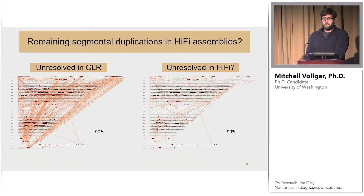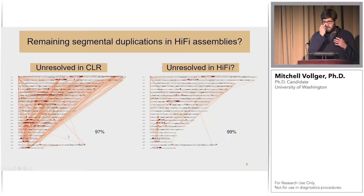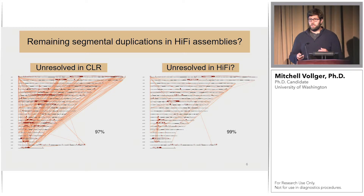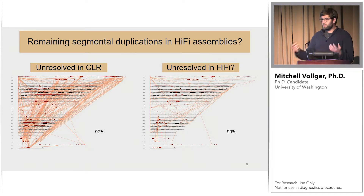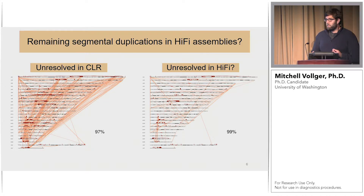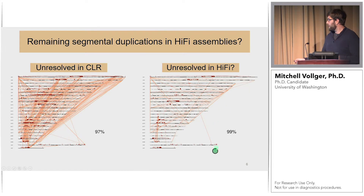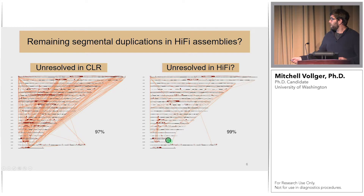We know from previous research that using PacBio CLR technology — not HiFi — duplications greater than 97 percent identical tend not to be resolved. Shown on the left are all segmental duplications in the human reference greater than 97 percent identical — this is what you're missing with a typical CLR assembly. However, we're excited about HiFi because if we push that threshold up to 99 percent identity, only these segmental duplications remain, significantly reducing the complexity of the problem.